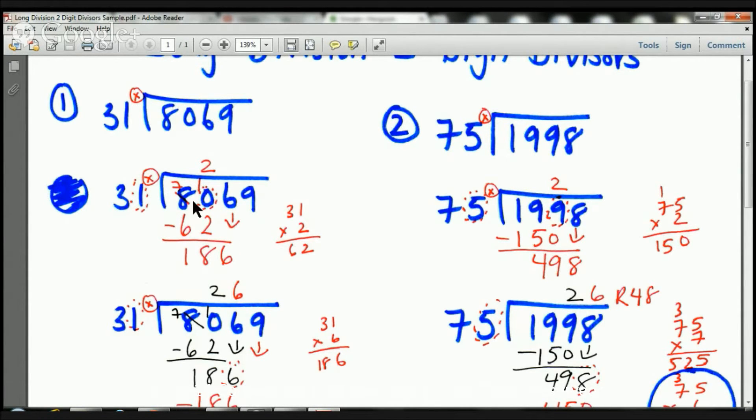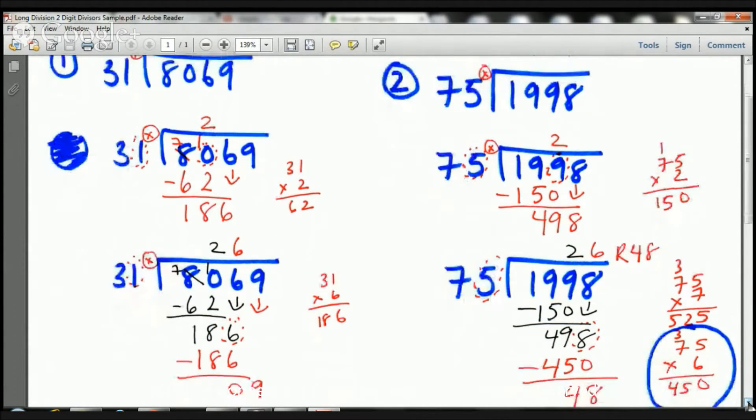31 times 2 equals 62. I'm going to put my 62 there, my subtraction, my line, and then I'm going to subtract. Well, I can't do that. I need to borrow. That becomes a 7. That'll become a 10. 10 minus 2 is 8. 7 take away 6 is 1. So here I have 18. Now I'm going to drop down this 6. Now I have 186. So let's take a look and see what happens next.